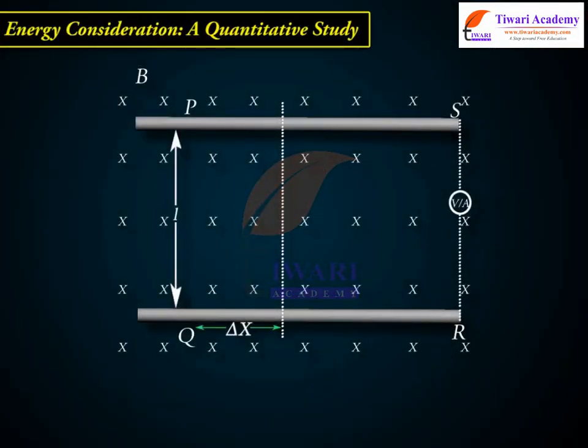In the rectangular loop, R is the resistance of a movable arm PQ. We assume that the remaining arms QR, RS, and SP have negligible resistance compared to R.